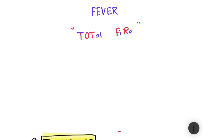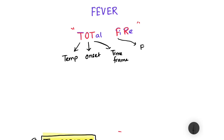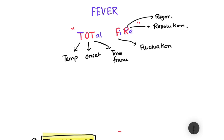There are around six attributes of fever that we need to characterize. Those attributes are: Temperature, Onset, Time frame, Fluctuation, Rigor — that means whether the fever was associated with shivering or not — and finally Resolution, how the fever resolves. This can be remembered using the simple mnemonic TOTAL FIRE, meaning the body goes into a state of total fire when you get a fever.